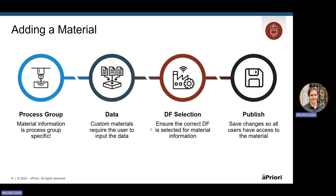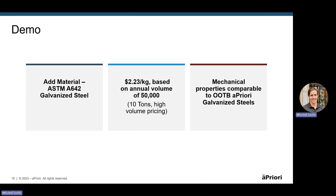Quick note on the data section: if you do have multiple materials that you're trying to load at once — anywhere from 10, 20, 30, etc. — we do have the ability to upload in bulk with Excel spreadsheets via CSV. But for this example, I'm going to show you how to add this one material through the main UI. We have our material ASTM A642 galvanized steel. Our supplier has given us a unit cost of $2.23 per kilogram based off the year one volume of 50,000, which equates to about 10 tons of material you're buying in that year — so this is a high volume pricing that we would want to use. We also noticed that Apriori does have some galvanized steels out of the box, so we're going to utilize similar mechanical properties comparable to the out-of-the-box ones to make this a simple addition to the digital factory.